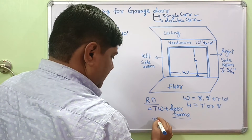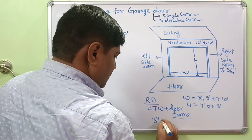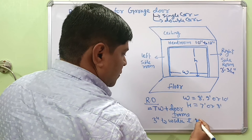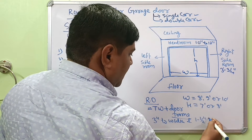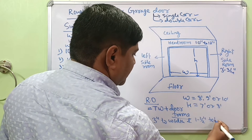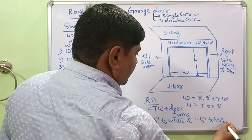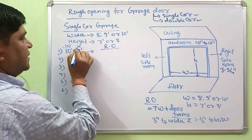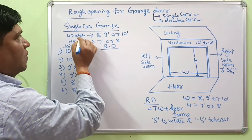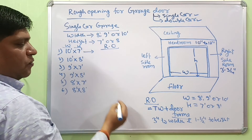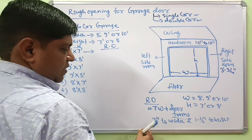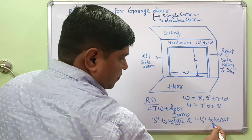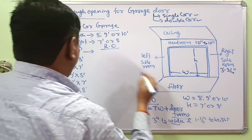To find the rough opening, just add 3 inches to the width and 1 and a half inches to the height. This is the width and this is the height of the single car garage, and now you can add 3 inches to the width and 1 and a half inches to the height.